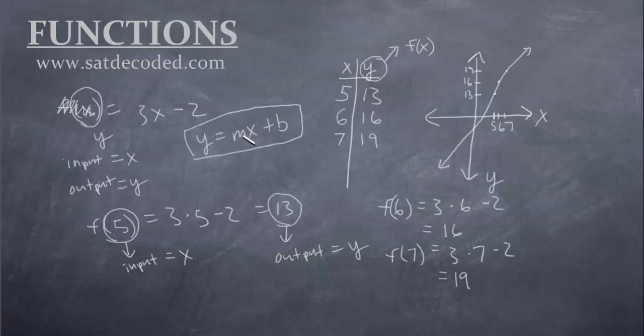So that tells us the m is a 3 so we have a slope of 3 and minus 2 is our b so we have a y-intercept of negative 2. So that's why this line, I didn't draw it very well but pretend this is a straight line with a y-intercept of negative 2 and a slope of 3.